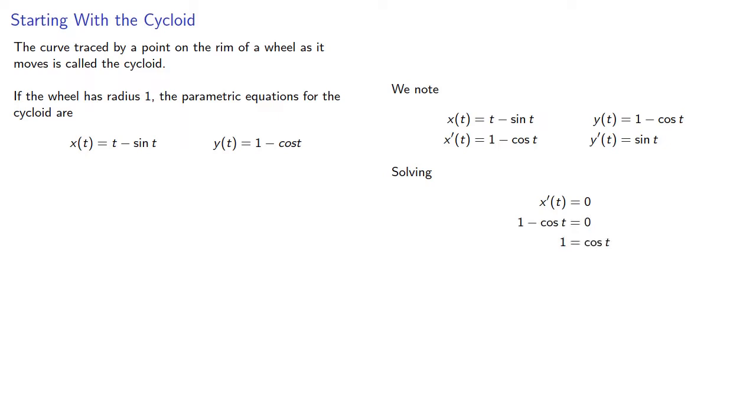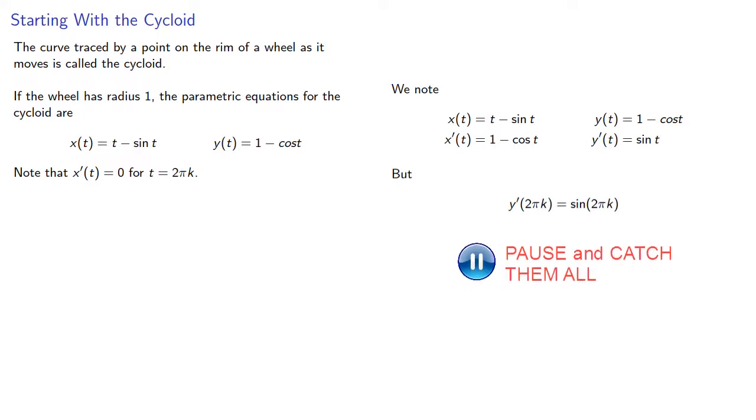And so x'(t) is going to be 0 for t equal to any multiple of 2π. But notice that the derivative of y at any multiple of 2π will be 0.